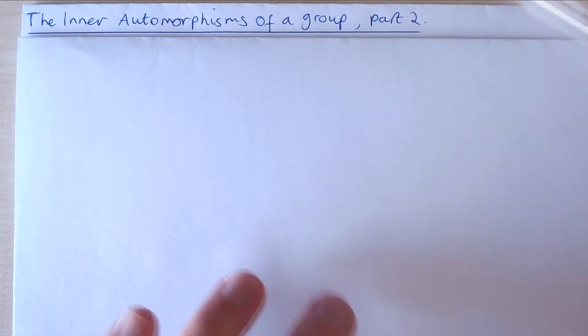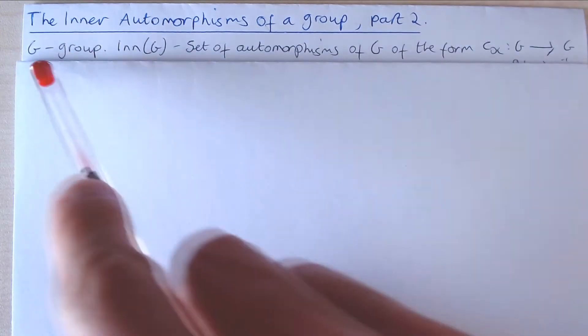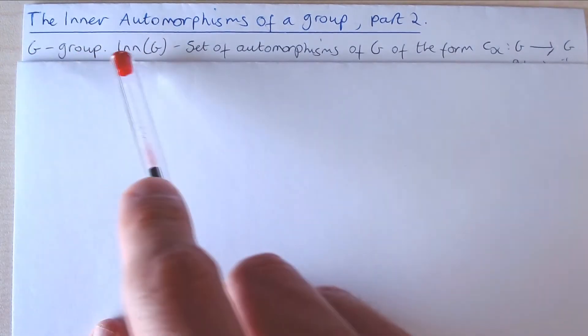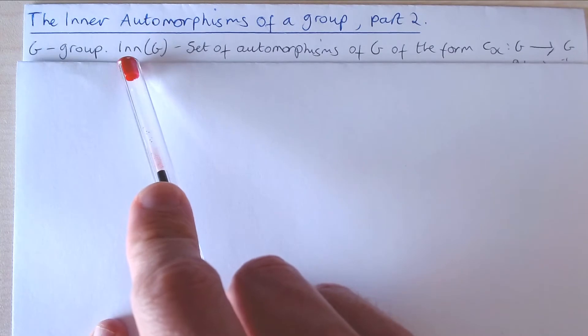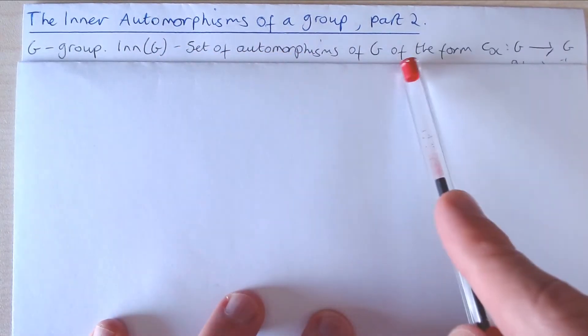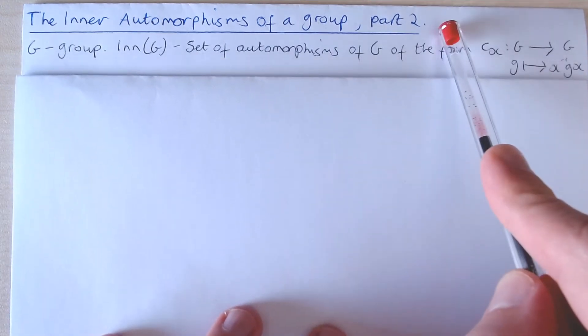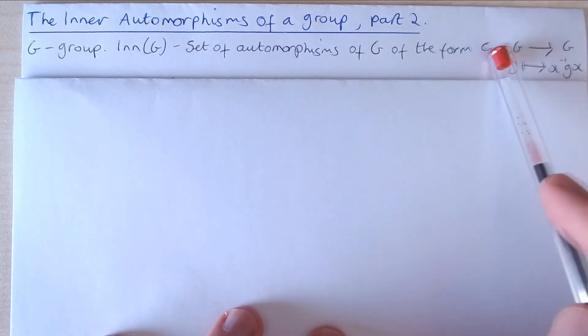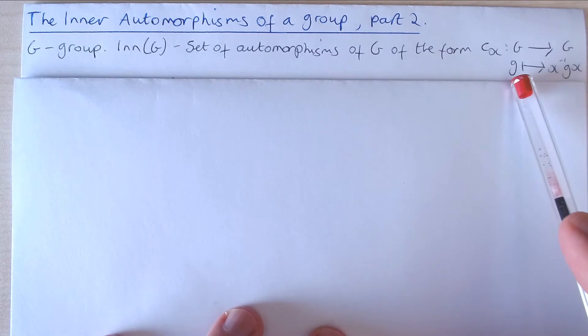But in summary, G is a group. The set of inner automorphisms, denoted Inn(G), is the set of automorphisms of G of the following form: maps sending the elements g of the group to x⁻¹gx for an element x in our group G. This is known as conjugation.